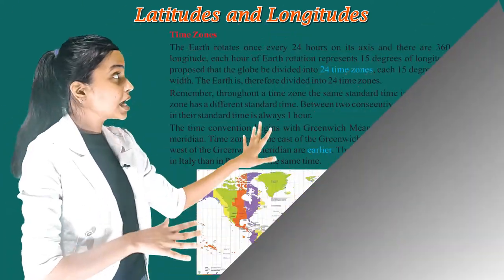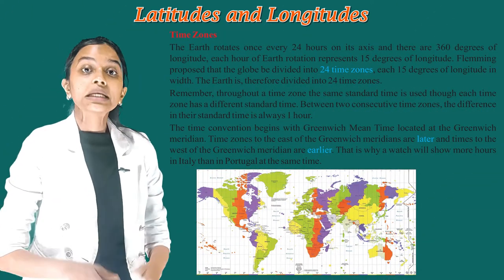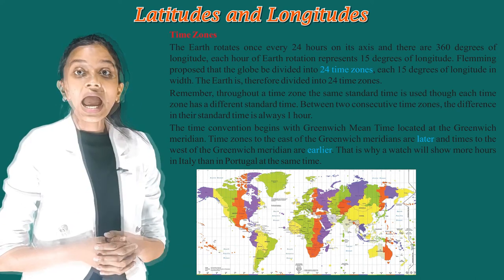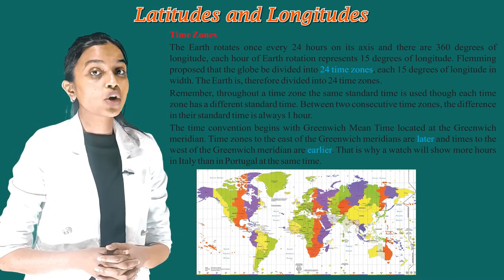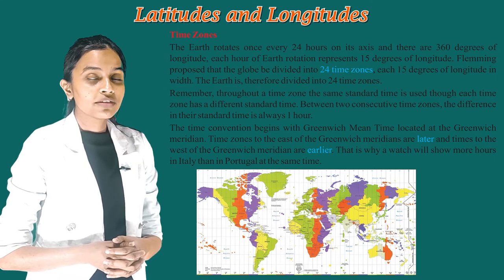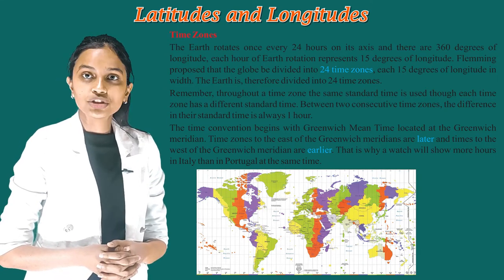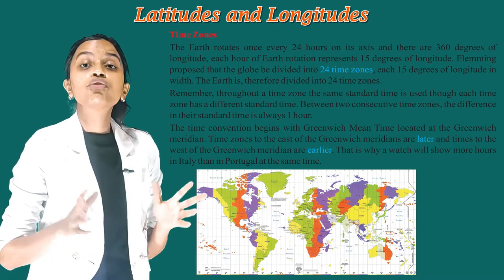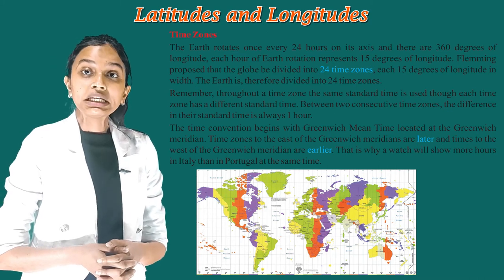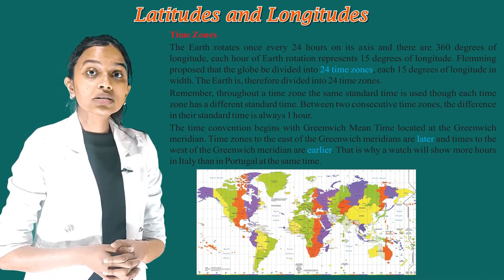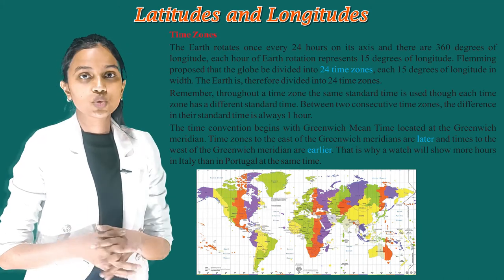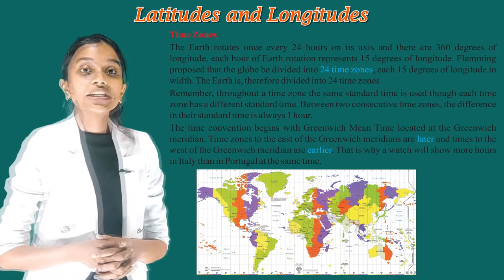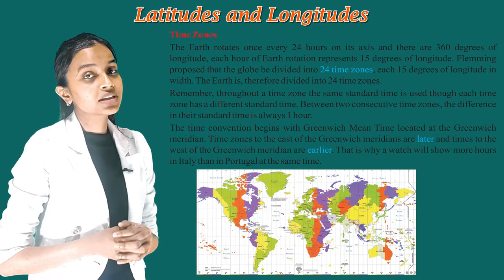Now, time zones. The earth rotates once every 24 hours on its axis and there are 360 degrees of longitude. Each hour of earth's rotation represents 15 degrees of longitude. Fleming proposed that the globe be divided into 24 time zones. Throughout a time zone, the same standard time is used, though each time zone has a different standard time.